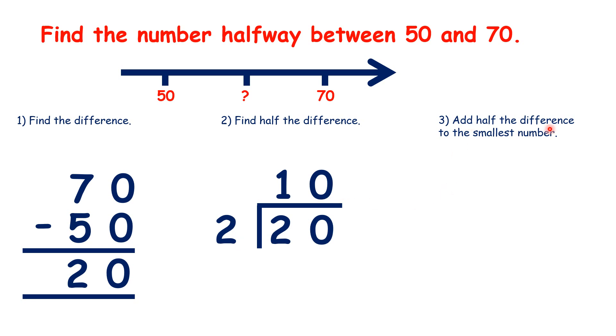And finally, we add half the difference to the smallest number. So 50, the number we started with, plus 10, half the difference, gives us our midpoint, which is 60.